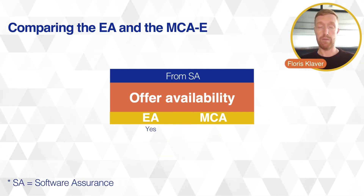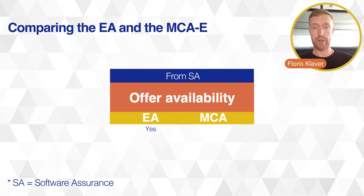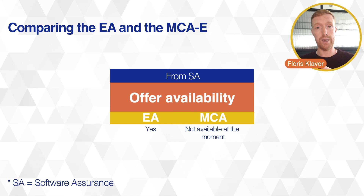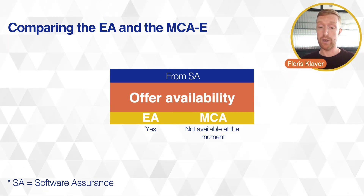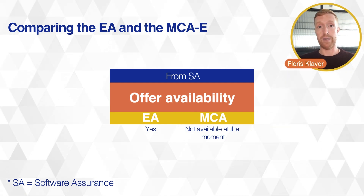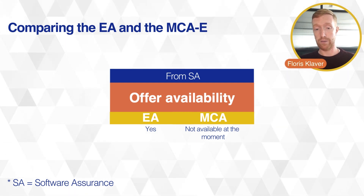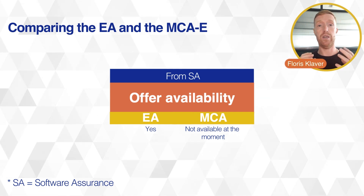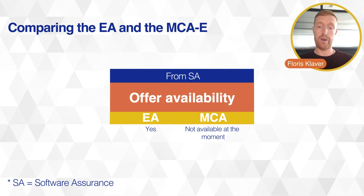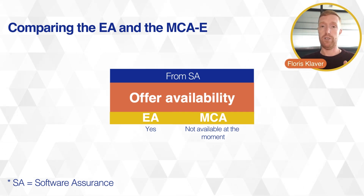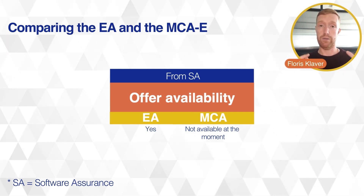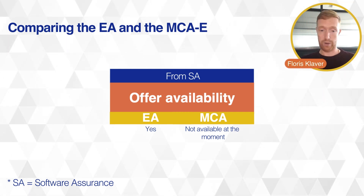Software Assurance (from SA) in the EA is not available in the MCAE. So if you migrate from an EA to an MCAE, you want to make sure you are compensated for having to step away from those from SA licenses. There has been a massive change in from SA versus how it was prior to February 2024 — Microsoft announced a big change here, so check the blog link if you're interested.